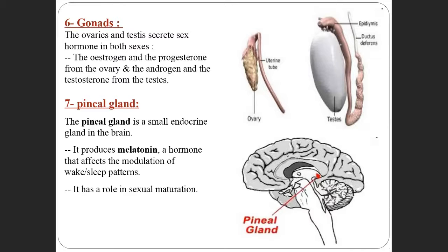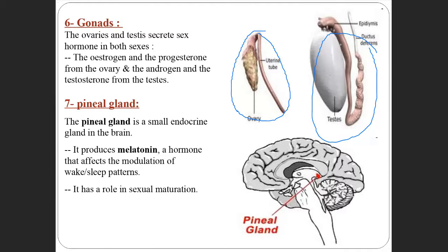The gonads are the next endocrine glands. In females, the gonad is called the ovary, and in males it is called the testis. Both secrete sex hormones: the ovary secretes estrogen and progesterone, while the testis secretes androgens and testosterone.